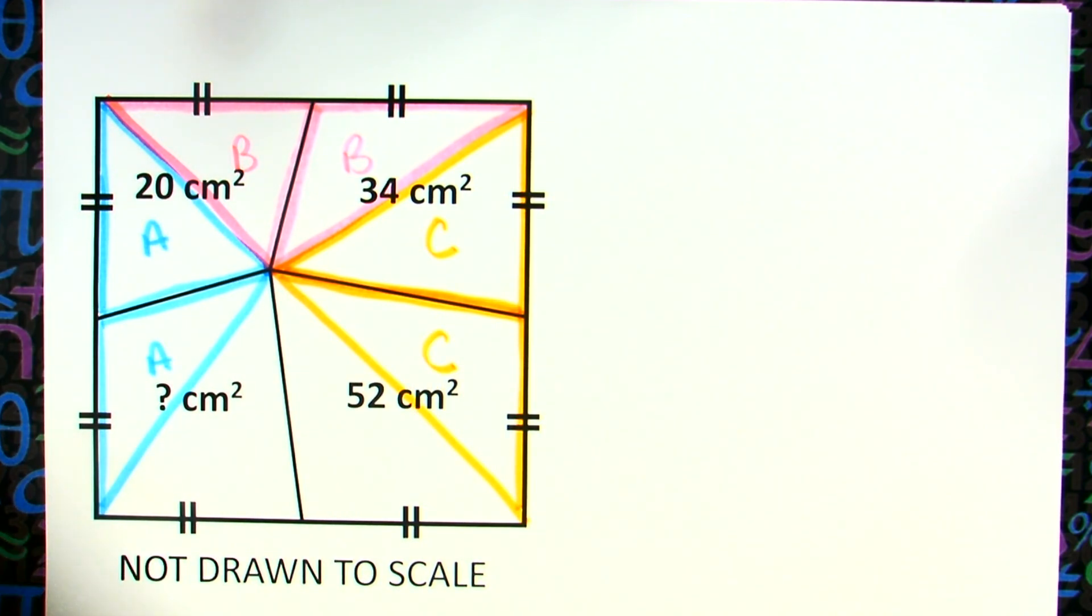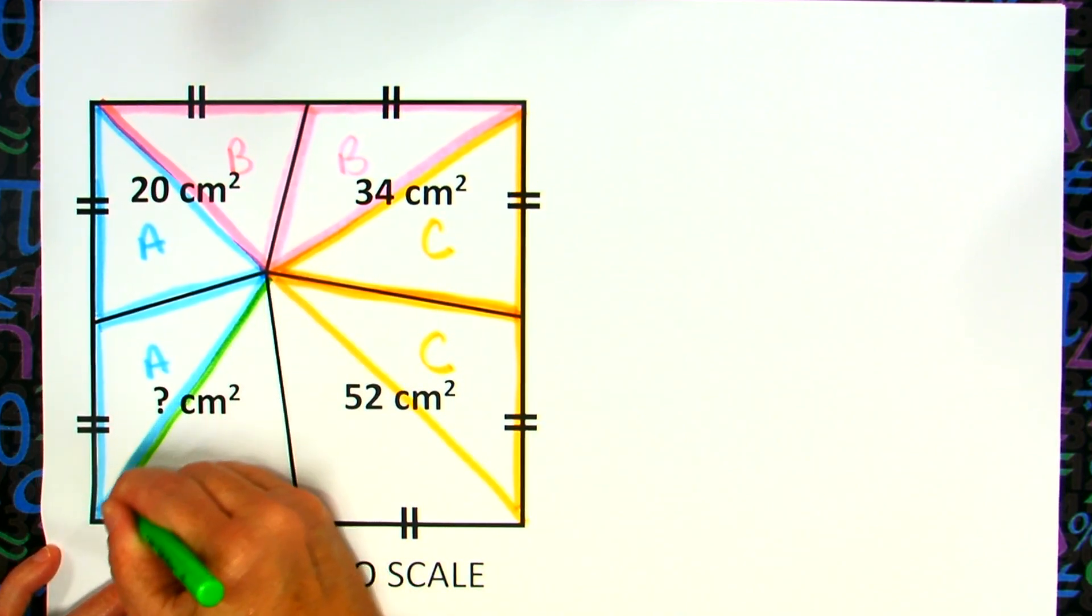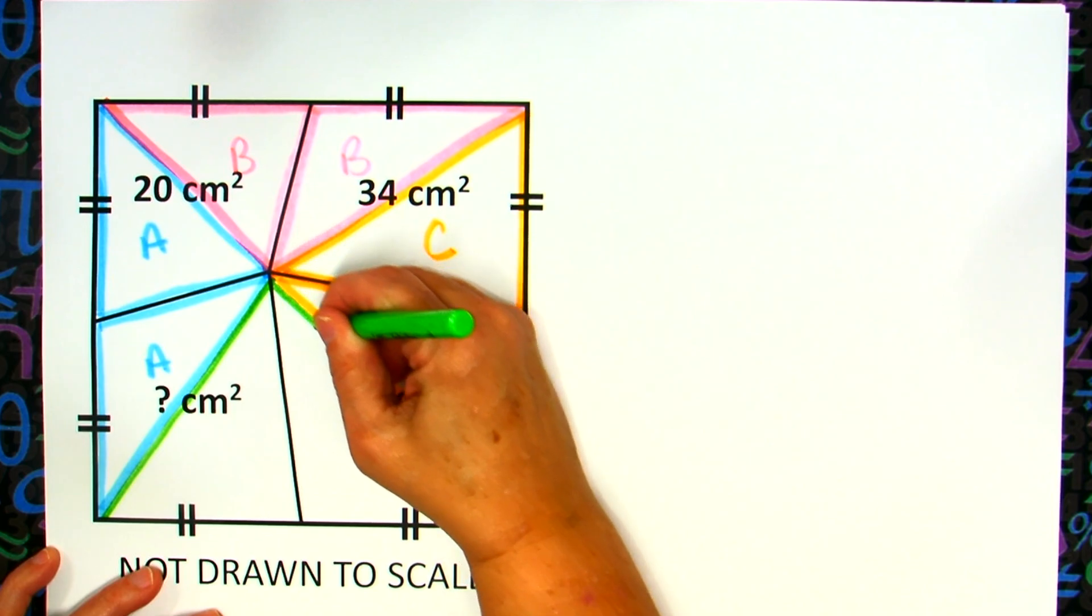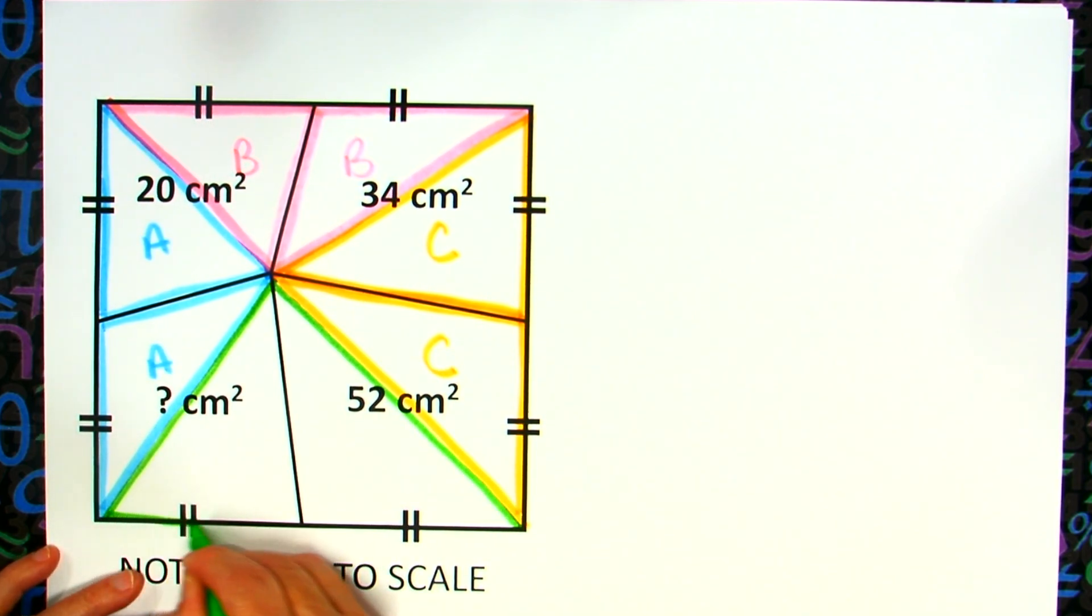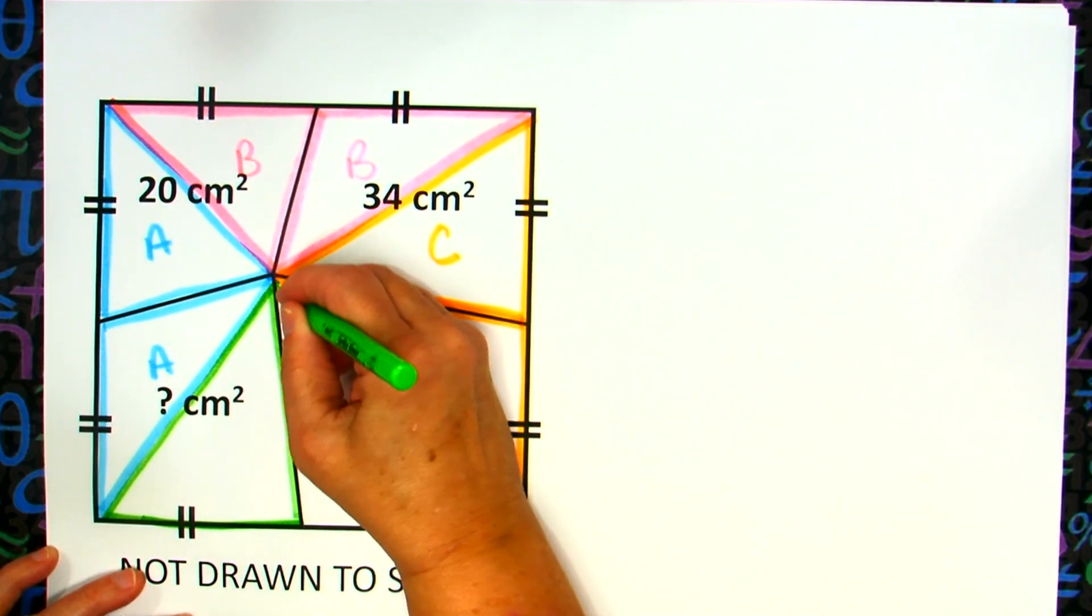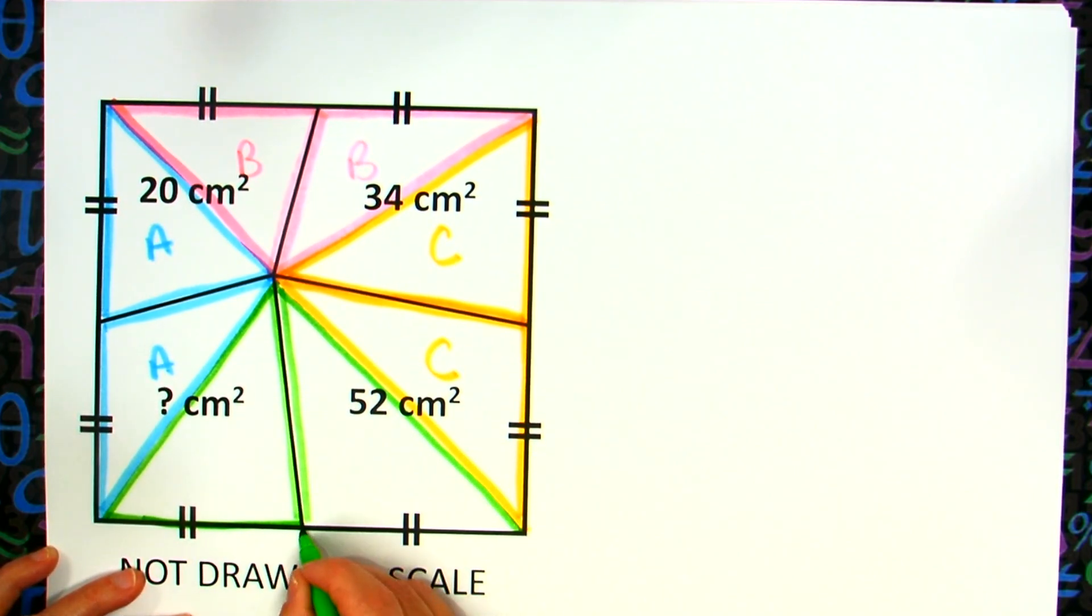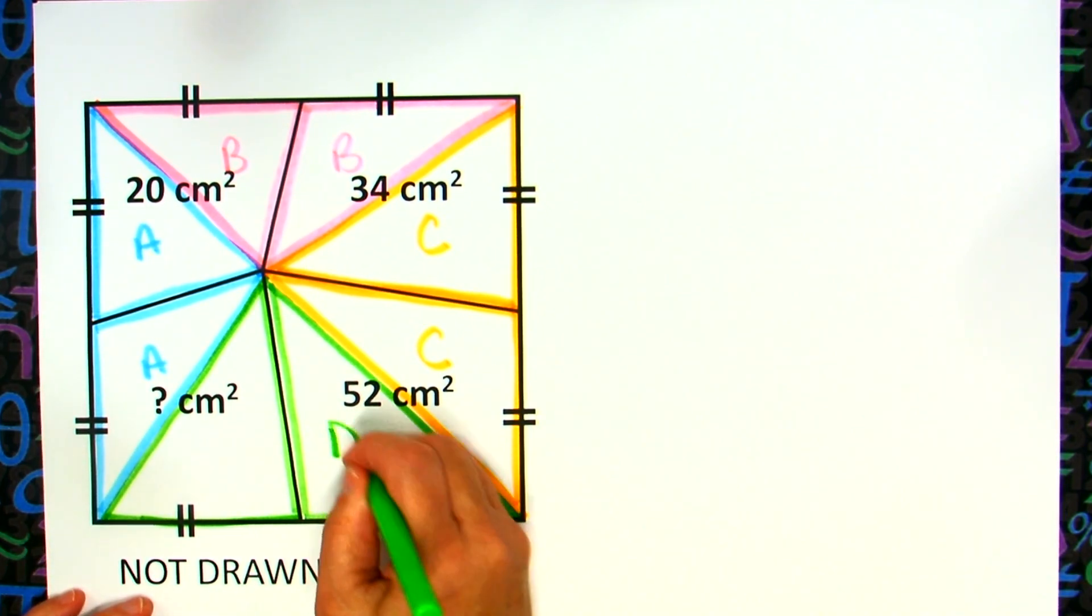And then my last one I will do from the center to this corner, and the center to this corner. And then the two little triangles would be this triangle right here, and this triangle over here. And then now I'm up to, I need another variable, so we'll just call these areas D.